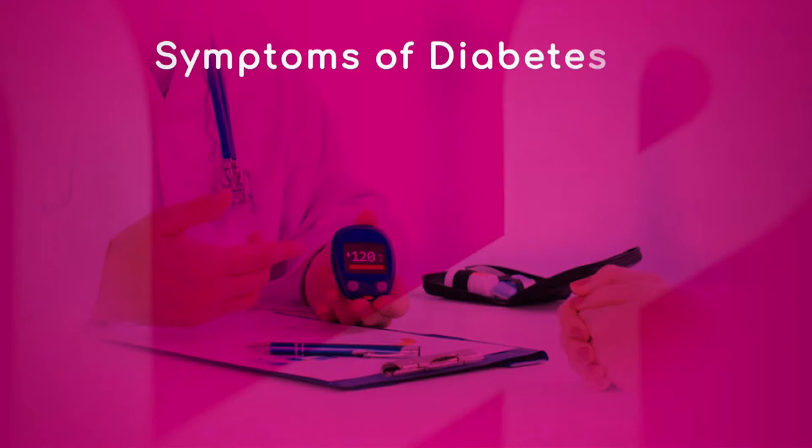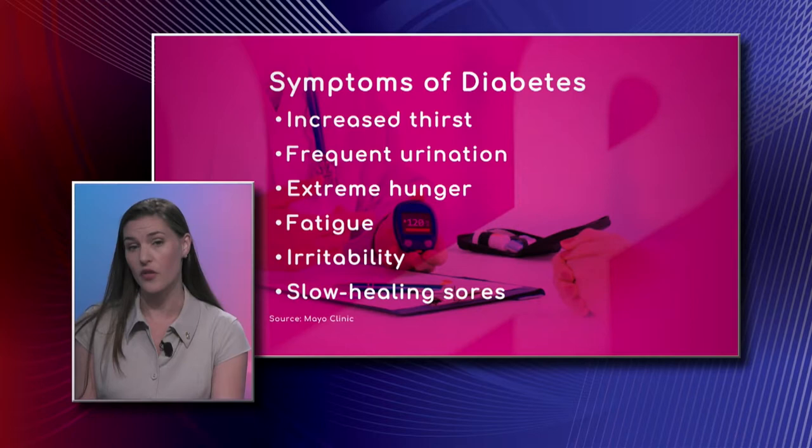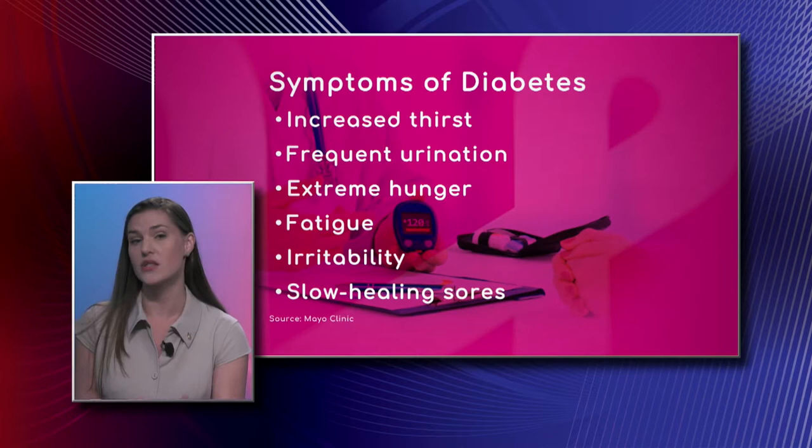Now that we have some background on what diabetes is, let's go through the symptoms. Starting with increased thirst — is that a common symptom? Yes, absolutely. When your sugars are very high, your body tries to compensate by excreting the extra sugar in the urine, so you end up urinating very frequently. Because you're using the restroom so much, your body becomes very thirsty to try to maintain water balance, which is why you get both increased thirst and increased urination.